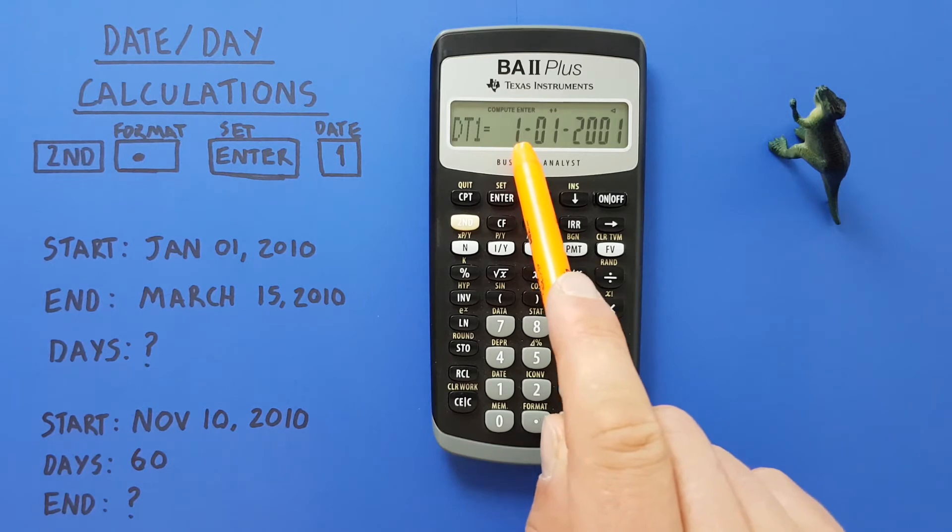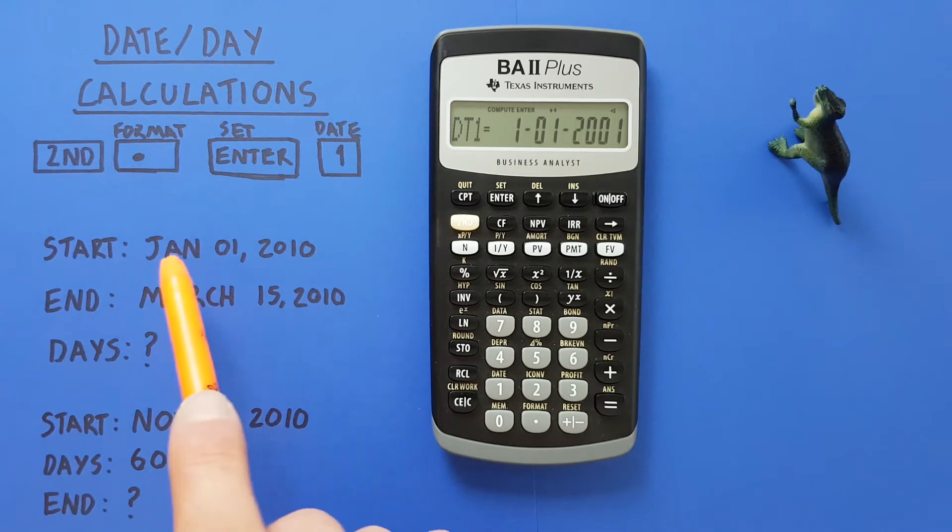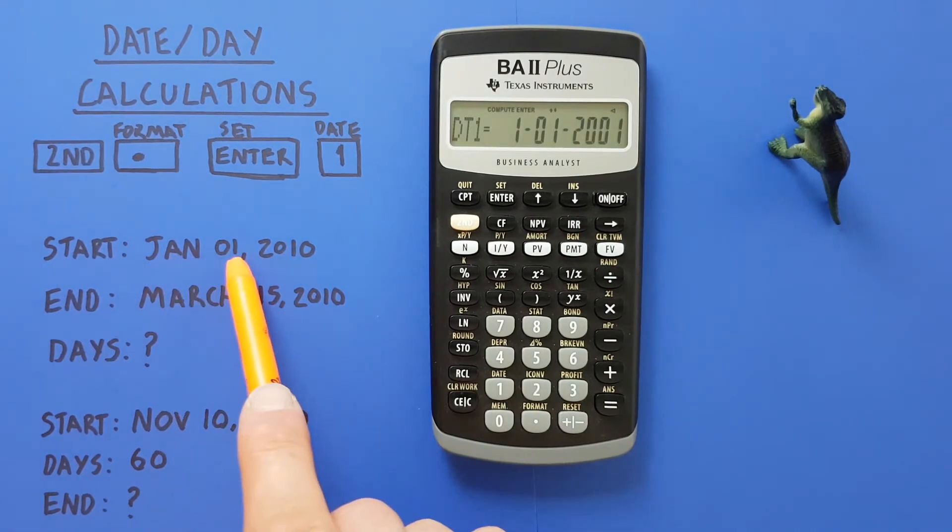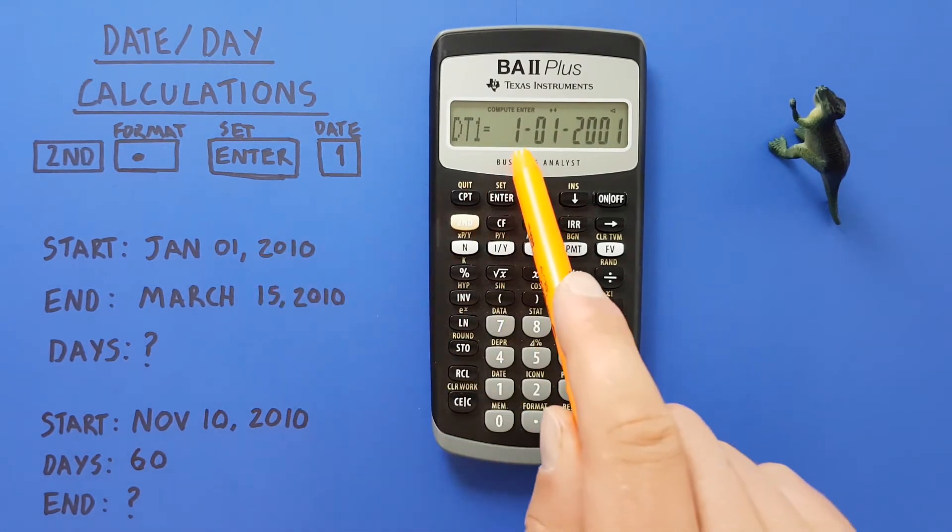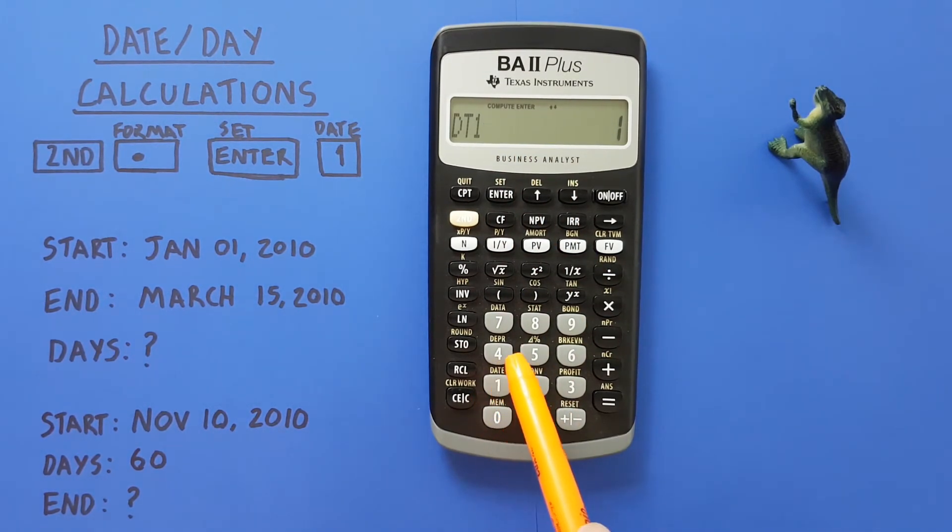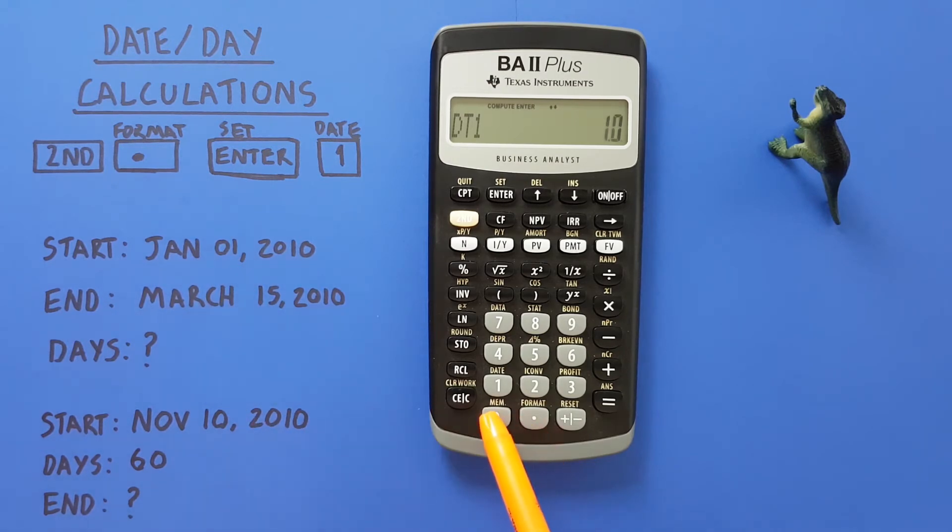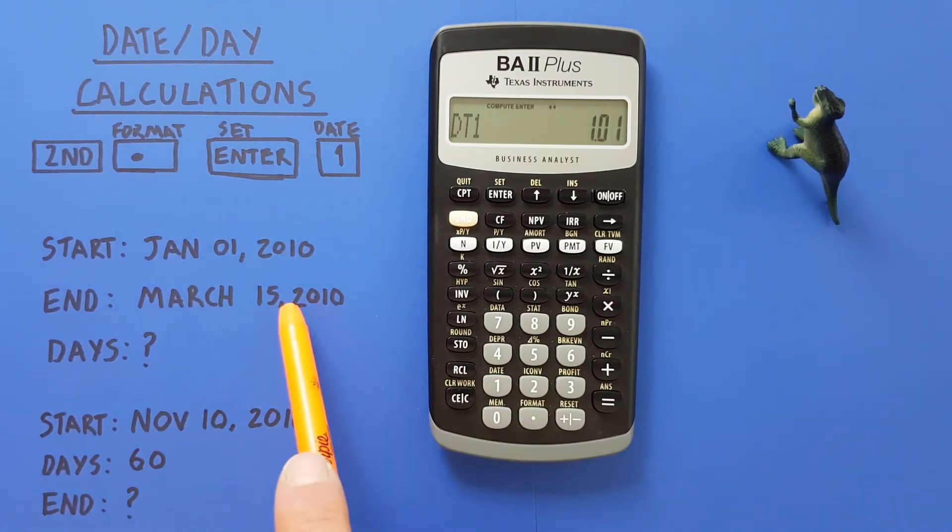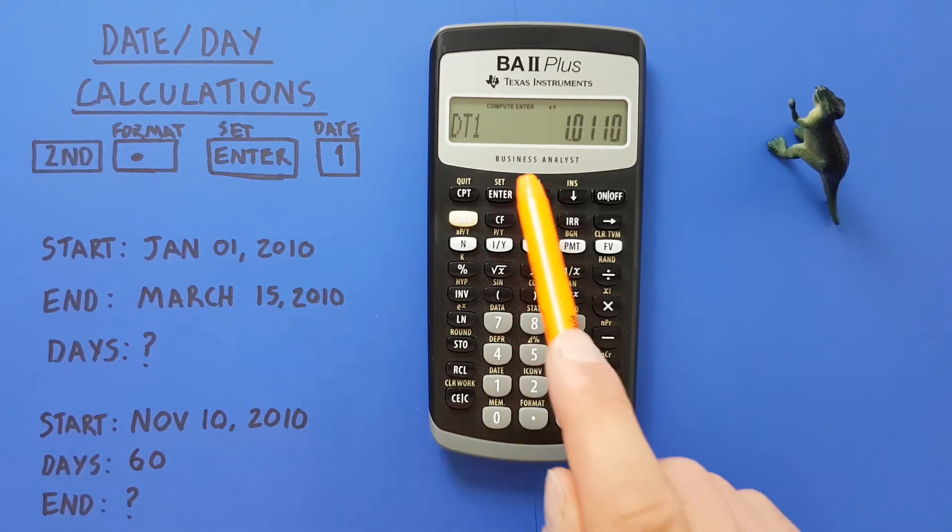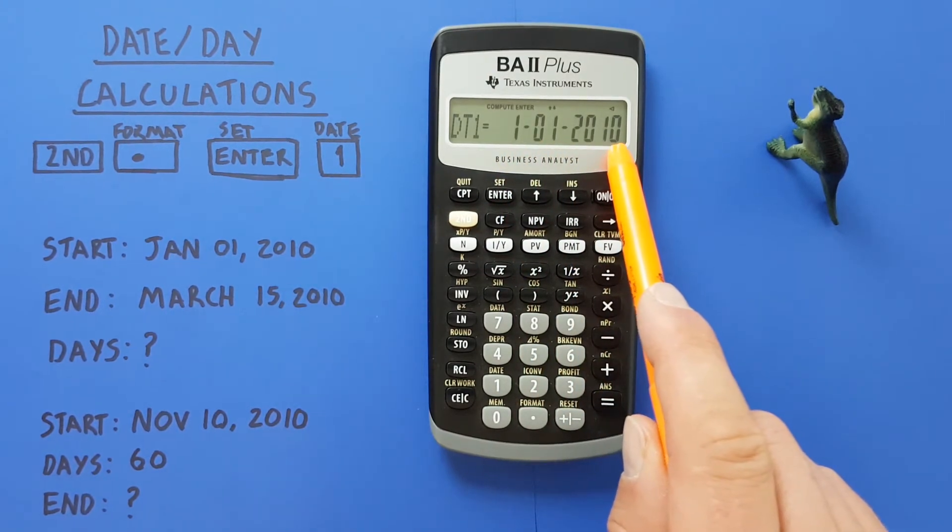Right now it's in the US format, so this is displaying January 1st, 2001. We want to enter January 1st, 2010, so we do that by entering first the month, so January is one, the first month, and then we hit the decimal key. Next the day, so first, 01, and then for the year we just enter the last two numbers, so for 2010 we enter 10 and press enter. This is now displaying January 1st, 2010.